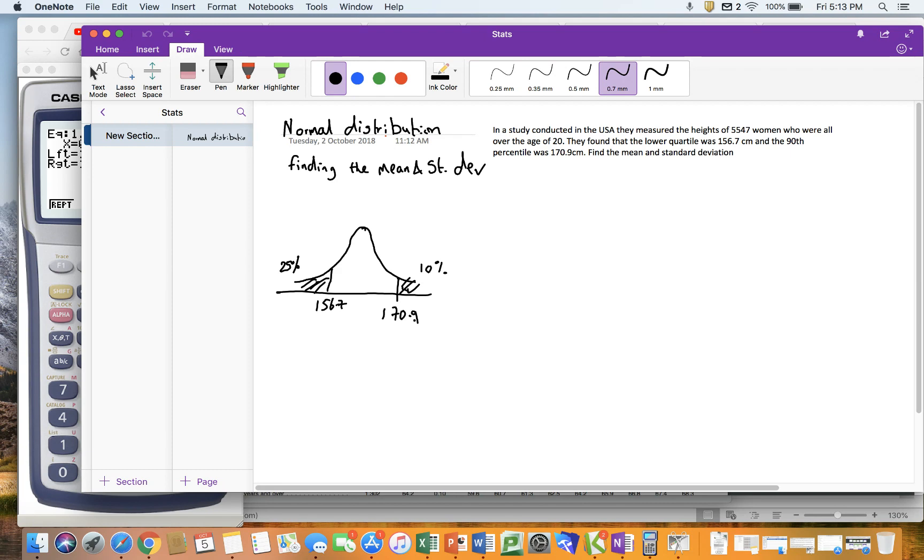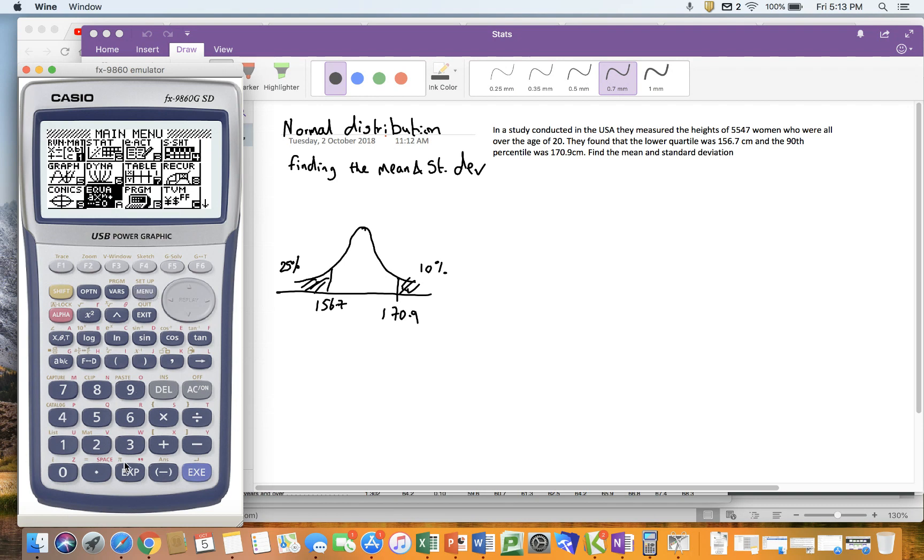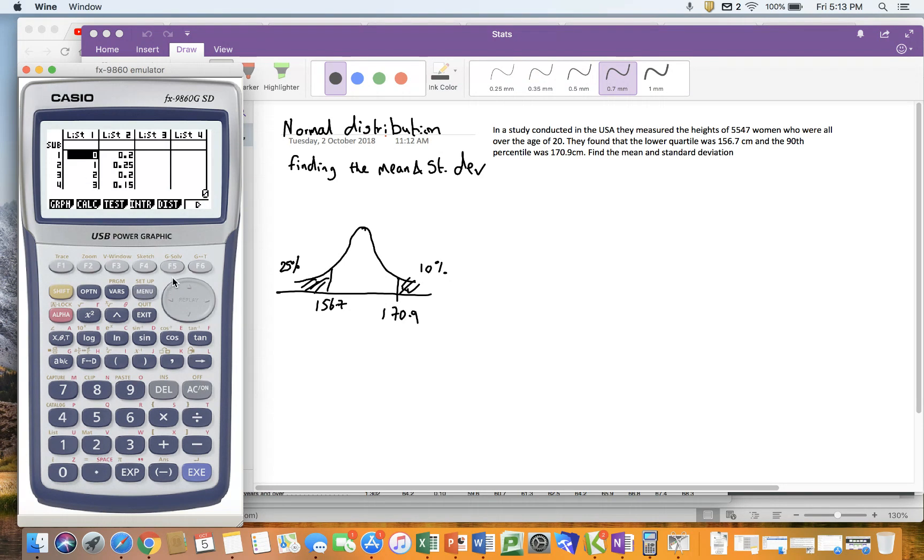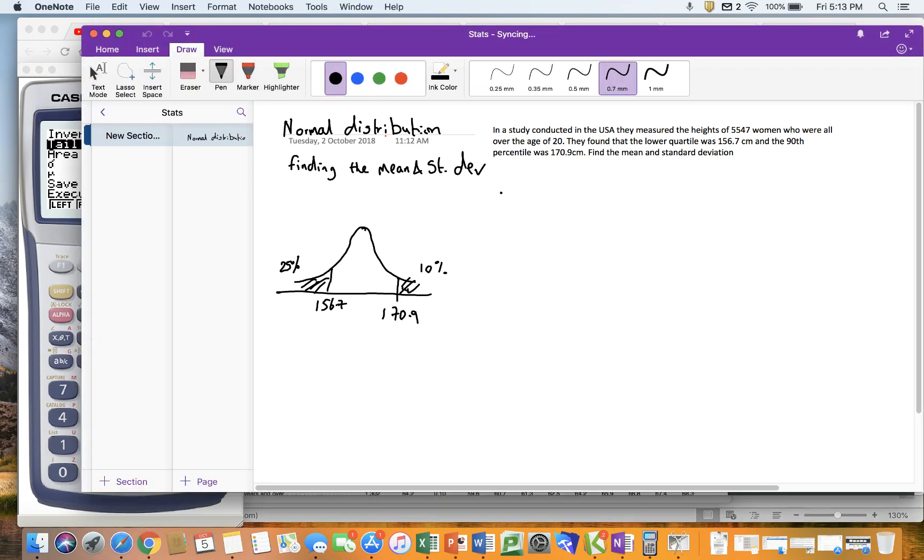Now, much the same as all the normal distributions we've done so far, if I go back to my calculator and go to normal distribution, I need to know a standard deviation and the mean to be able to work this out. So once again, like in all of these ones we've done, we need to use the standard normal.